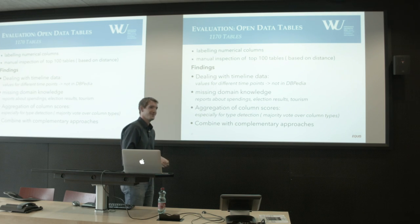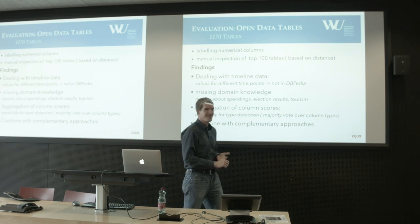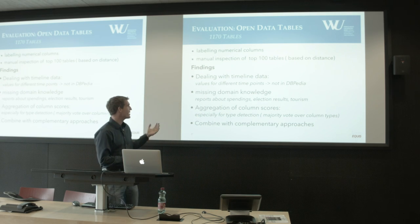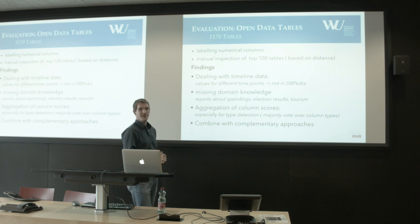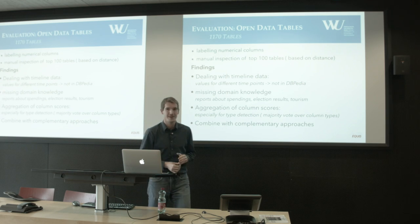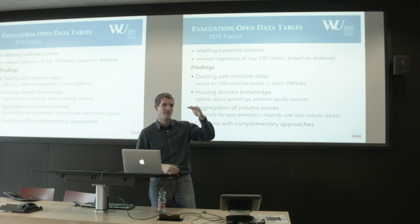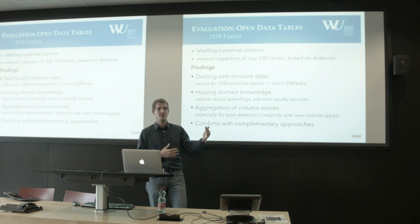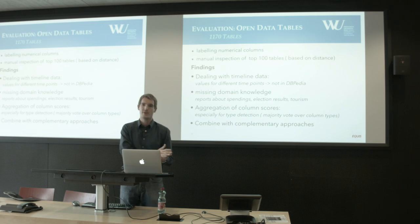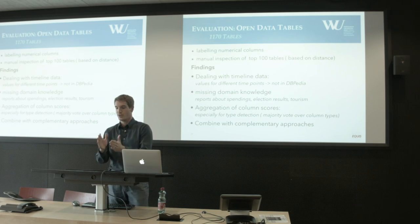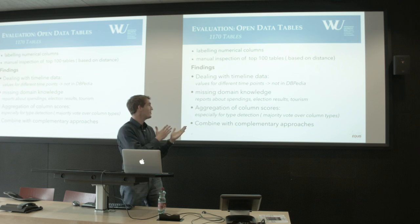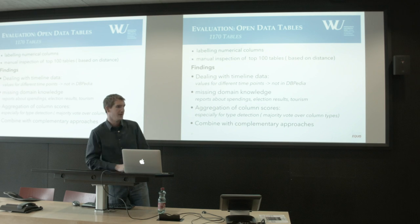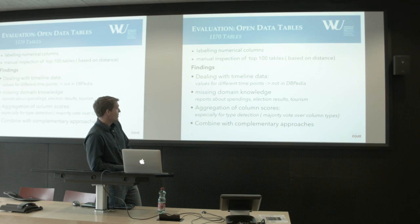We played around and the results were kind of devastating. A lot of CSV files have timeline data — results for 2012, 2013, 2014, 2015, 2016 — which is information not in DBpedia. DBpedia has the latest snapshot, like the average temperature in 2014, but the CSV table has the average temperature from 2013 to somewhere else. We also had a lot of missing domain knowledge.